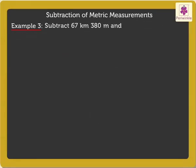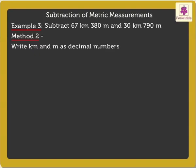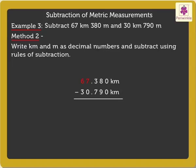Quickly solve the next example, but this time using the second method. Write kilometres and metres as decimal numbers and subtract using rules of subtraction. We get 67.380 kilometres and 30.790 kilometres.